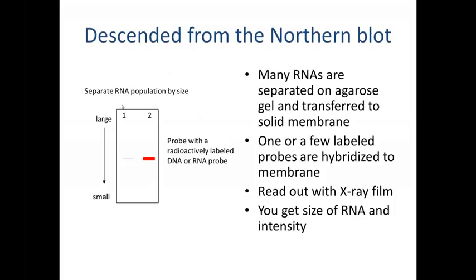The technology is descended from the northern blot. In a northern blot, samples are run on a gel and then probed with a radioactively labeled DNA or RNA probe. For example, two conditions might show relatively low levels of a particular RNA in one sample and higher levels in another. Many thousands of different RNAs are separated in each lane, but you're usually only detecting one or a few species. The readout is typically on an X-ray film, and in addition to getting the intensity of RNA expression you also get the size of the RNA.